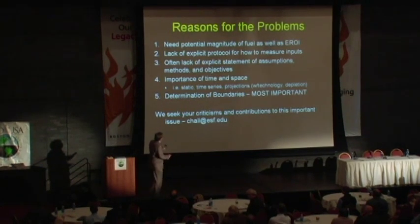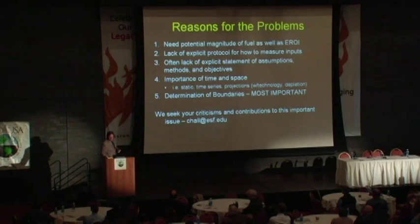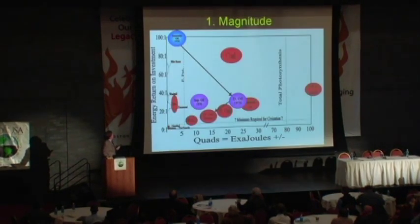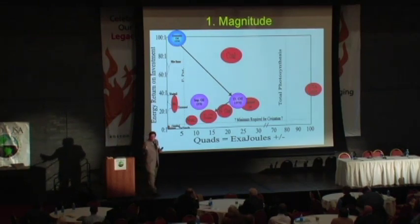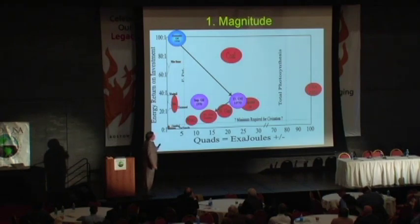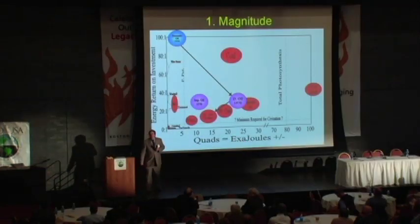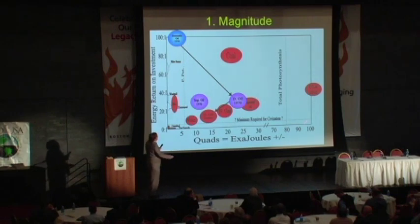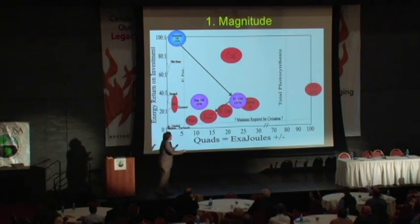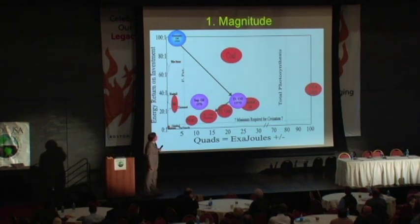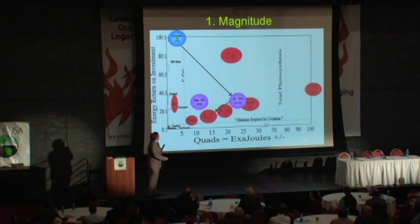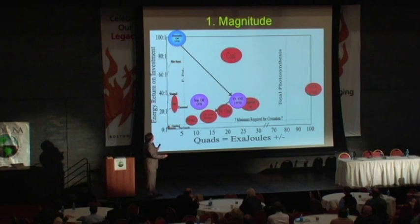Most important is determining the boundaries, and we seek your criticisms and contributions — we're just getting started in really trying to get this standardized. Now, this is what I call the balloon graph. The size of the balloon doesn't mean anything; the color is a little bit important. 1930 is blue, 1970 is purple, red is more or less today. What I'm plotting here is energy return on investment for the United States versus the magnitude. The USA now produces a little more than 100 exajoules or quads, or 100% if you want, with a mean energy return on investment of maybe 30 to 40 to 1.